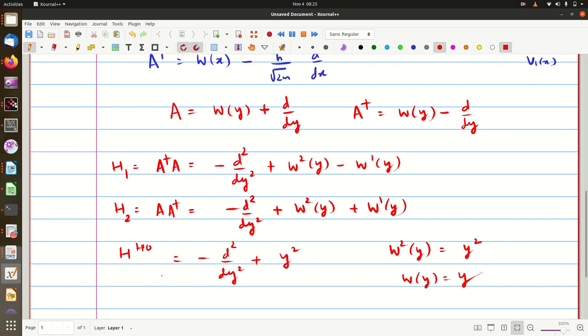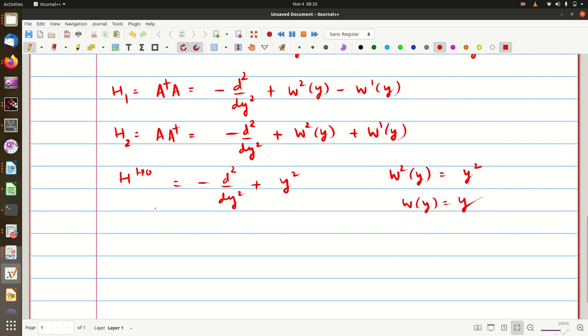Okay, so if we choose like that, then we can immediately see that your H1 will become equal to H harmonic oscillator minus w dash of y, w dash of y will be 1 and H2 will be H harmonic oscillator plus 1, so H2 can be written in terms of H1 as H1 plus 2.